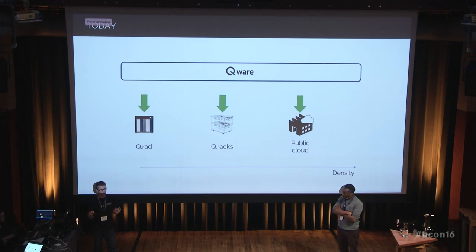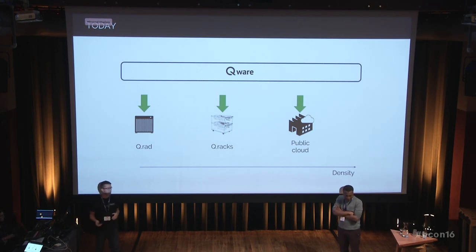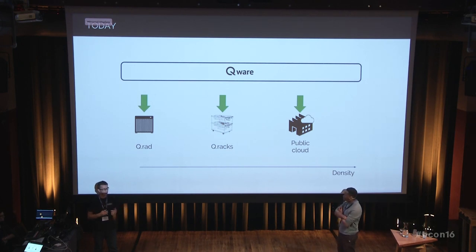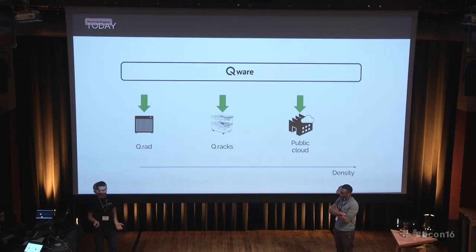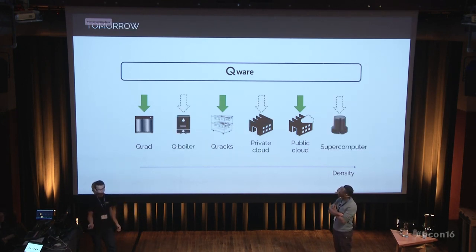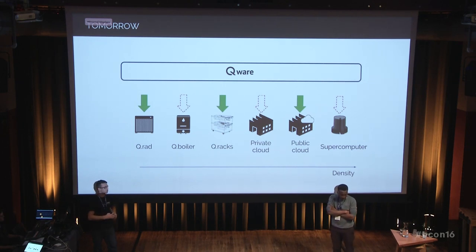You can put a QRAD in a building and have a lot of heat for that building. We are also able to use public cloud like Amazon to send computation — it's the same for our clients. They send us their computation and we can send it to the heaters, or if there are not enough heaters, we can send it to the public cloud. We are also working on heating water and using private cloud to scale when needed.